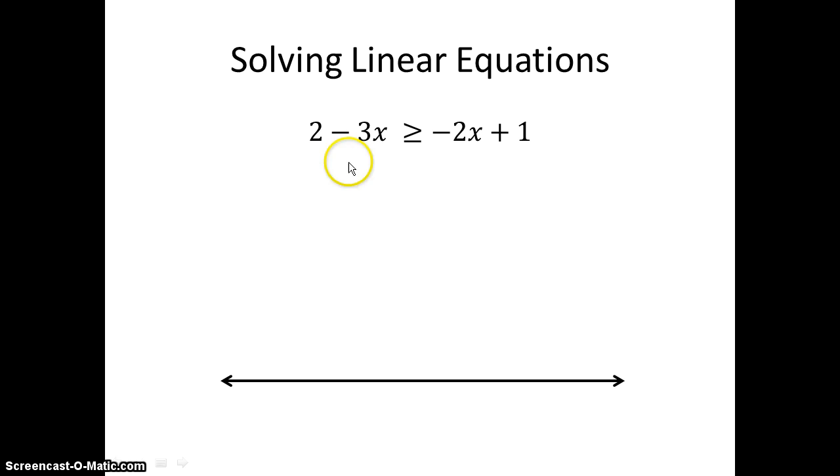Now I have variables on both sides. Now they're both negatives. But I want to try to keep my coefficient positive, right? So I'm going to bring this one, my lesser, over to the greater side. So plus 3x plus 3x. And then I'm going to subtract 1 from both sides. So 2 minus 1 is 1 is greater than or equal to negative 2 plus 3x is x. So I have 1 is greater than or equal to x. And I cannot simplify that anymore. So I can rewrite that as x is less than or equal to 1. You see, all I did is completely flip everything around.